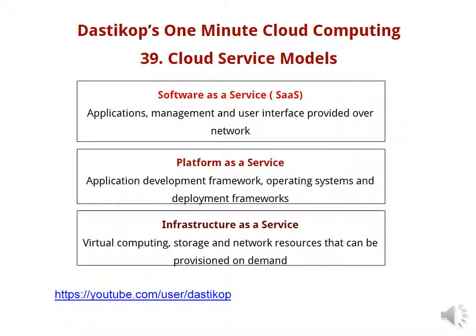The basic one is called Infrastructure as a Service, where virtual computing, storage, and network processes that can be provisioned on demand are provided. What it means is you can ask for a resource and also specify the quantity or duration of that resource. For example, you can say I want 10 GB of space, or you can specify the computing you need. All this can be given under Infrastructure as a Service.